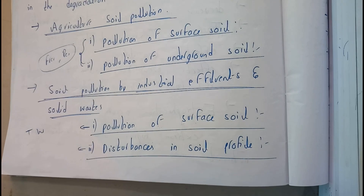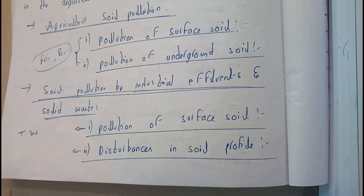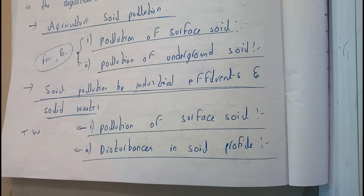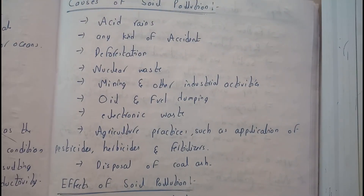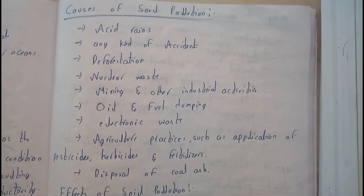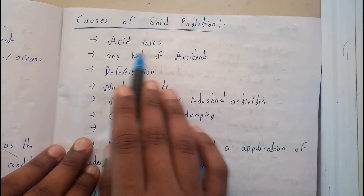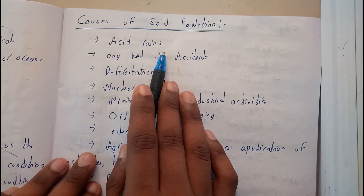So those are the types and causes of soil pollution. Now let's go through some examples. Soil pollution is caused due to acid rains — acid rains cause soil pollution as well.